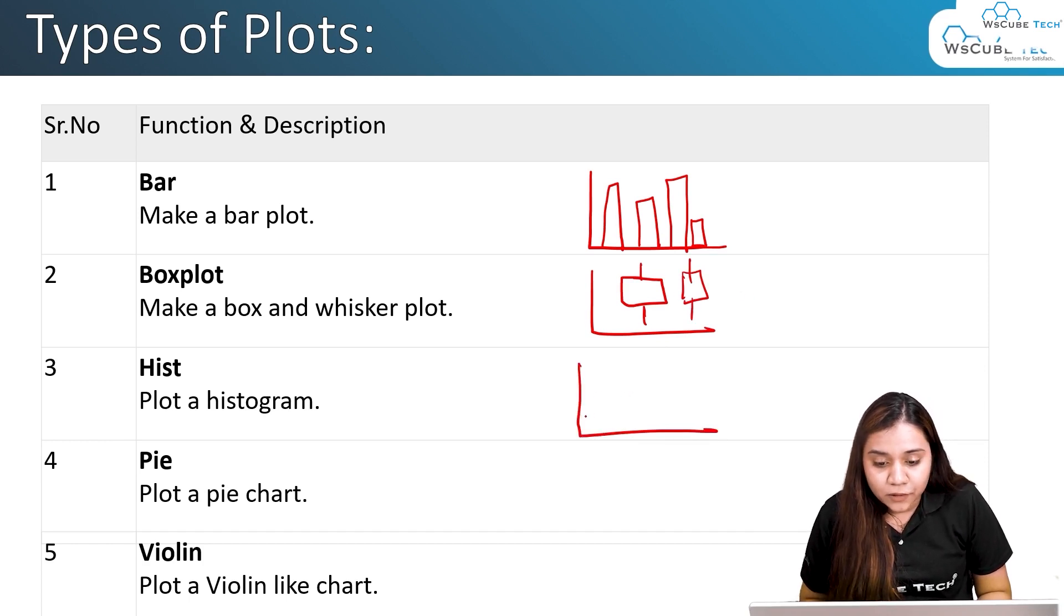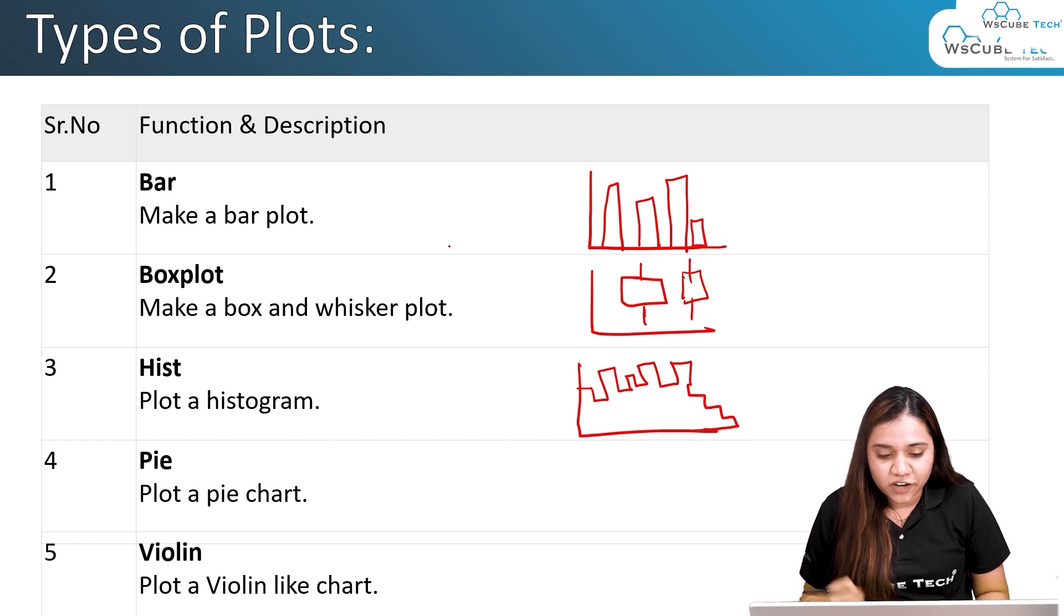If I talk about the histogram plot, it looks like this—we have densities which goes like this and then it comes down. Just ignore my drawing and try to understand what a histogram plot looks like. Then we have pie chart. I guess everyone knows what a pie chart looks like. It has a circle with different ratios of different values.